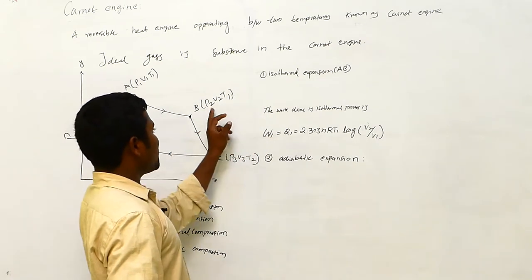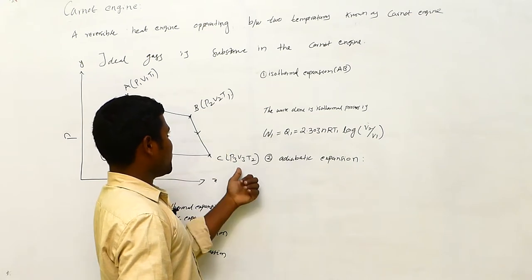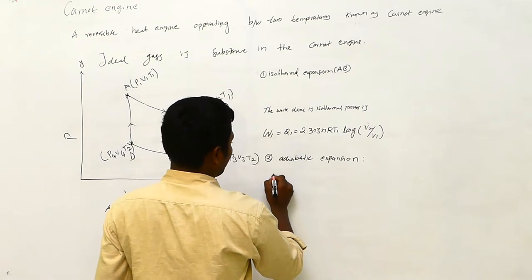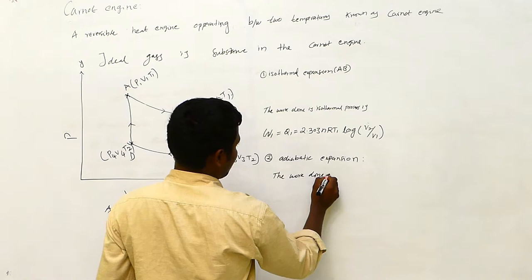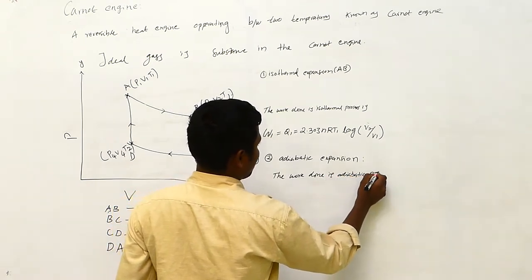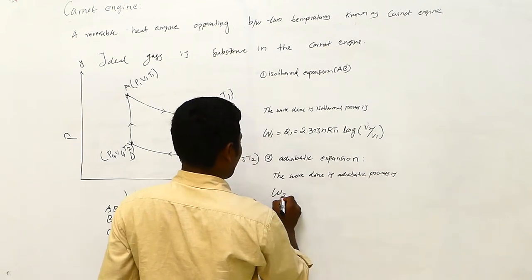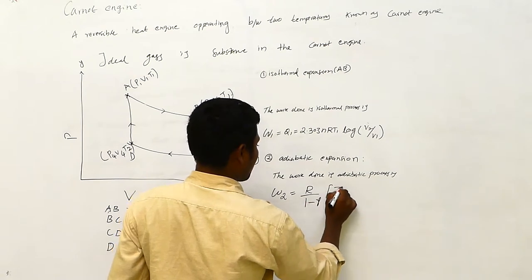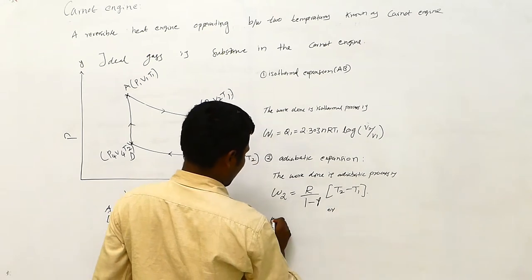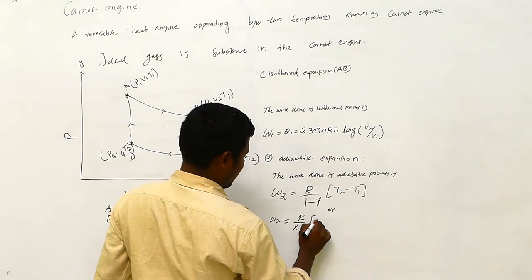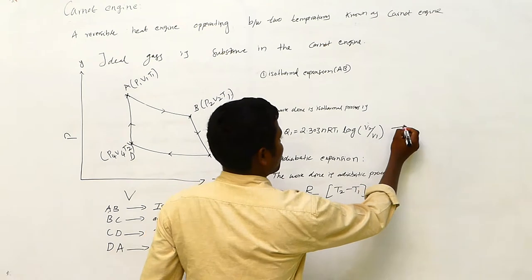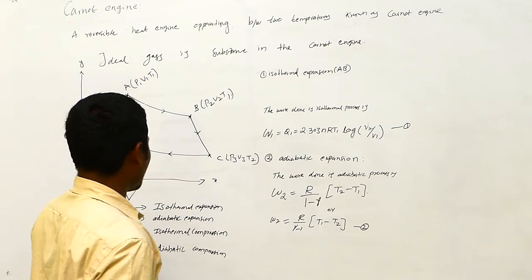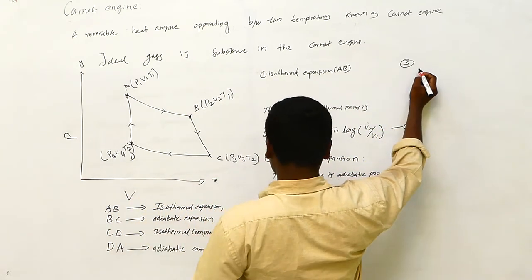For the second process, adiabatic expansion B to C: the state goes from P2, V2, T1 to P3, V3, T2. The work done in adiabatic expansion is derived accordingly — this is equation number two. The third process is C to D, which is isothermal compression.